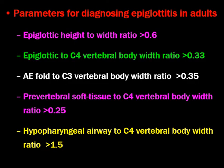Parameters for diagnosing epiglottitis in adults on lateral X-ray: epiglottis height-to-width ratio should be more than 0.6; epiglottis-to-C4 vertebral body width ratio should be more than 0.33; aryepiglottic fold to C3 vertebral body width ratio is 0.25; prevertebral soft tissue to C4 vertebral body width should be more than 0.25; and hypopharyngeal airway to C4 vertebral body width should be more than 1.5. These ratios are important primarily for postgraduates.